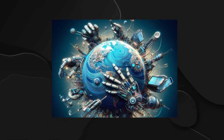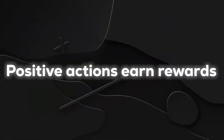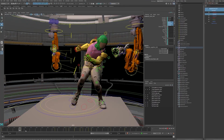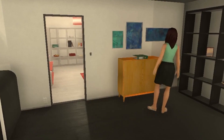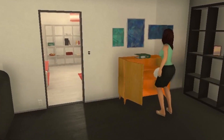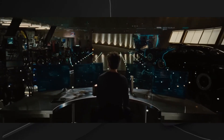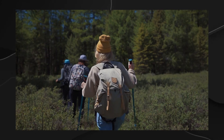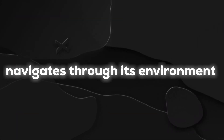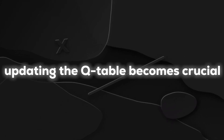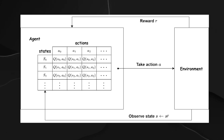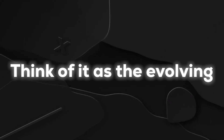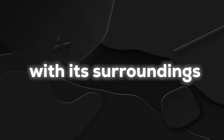As our AI explores its virtual world, it receives feedback on its actions. Positive actions earn rewards, negative ones earn penalties. This feedback helps our AI update the Q-Table, learning from its experiences and improving its decision-making over time. Updating the Q-Table involves a bit of math, but we'll demystify the Q-Learning algorithm, breaking it down into simple steps. This table is more than just a cheat sheet — it's the learning mechanism that guides our AI's decision-making process, like the evolving wisdom our AI gains as it interacts with its surroundings.